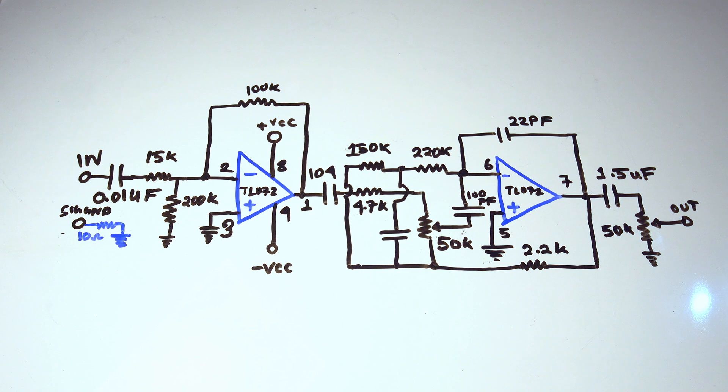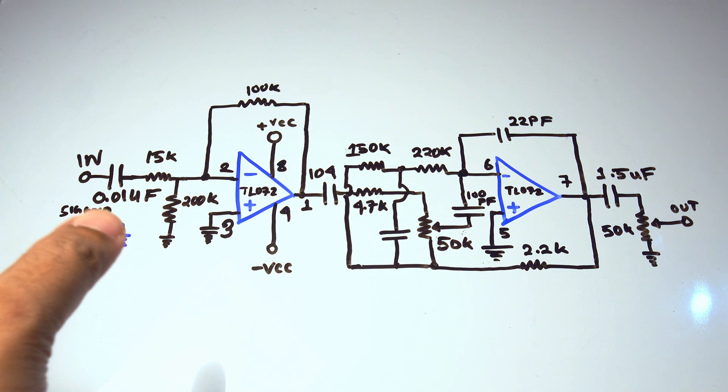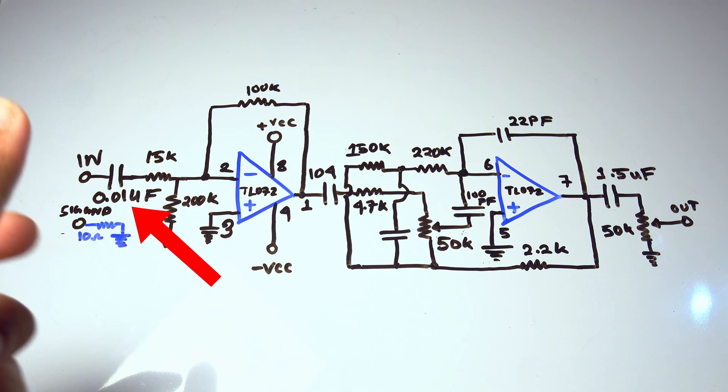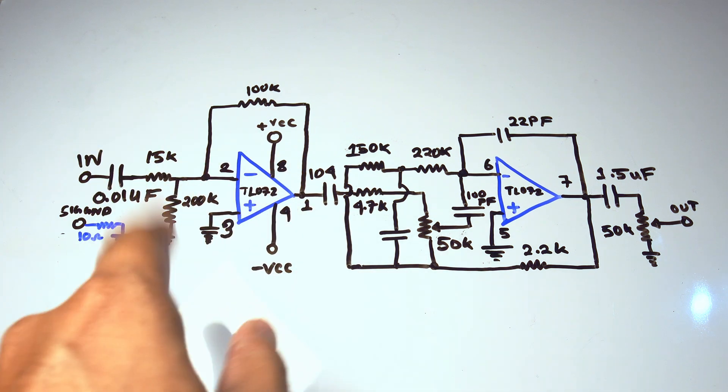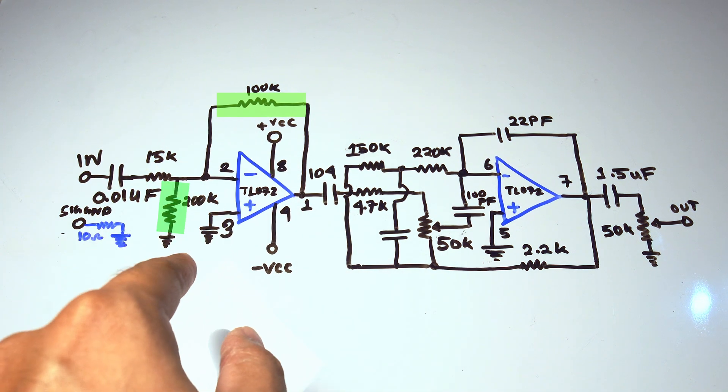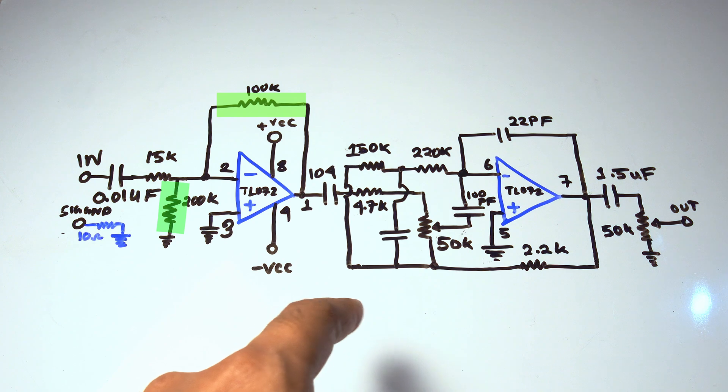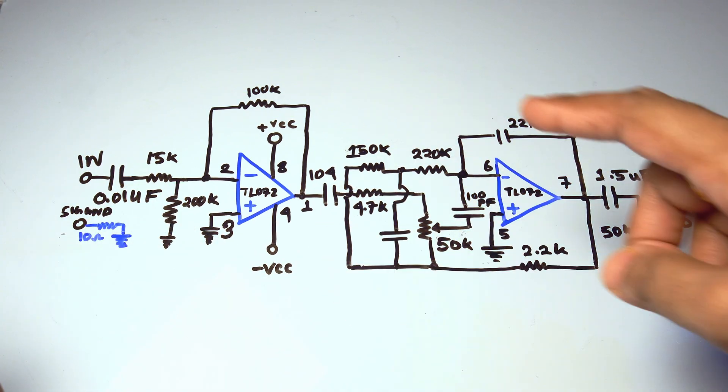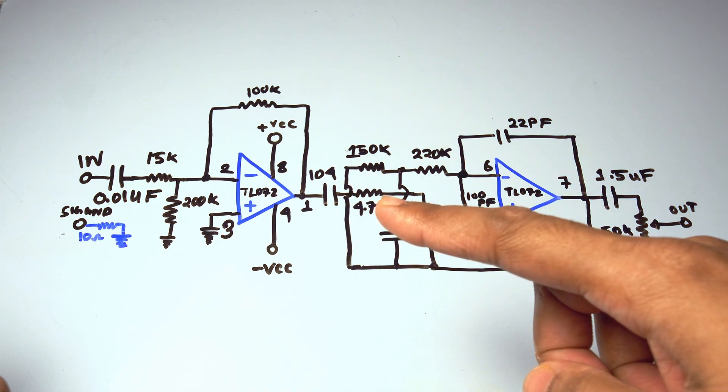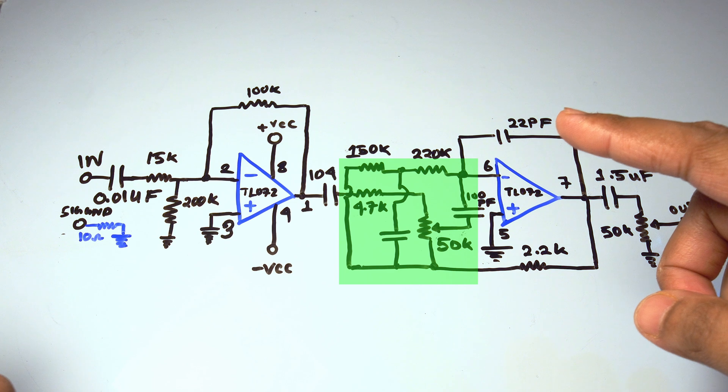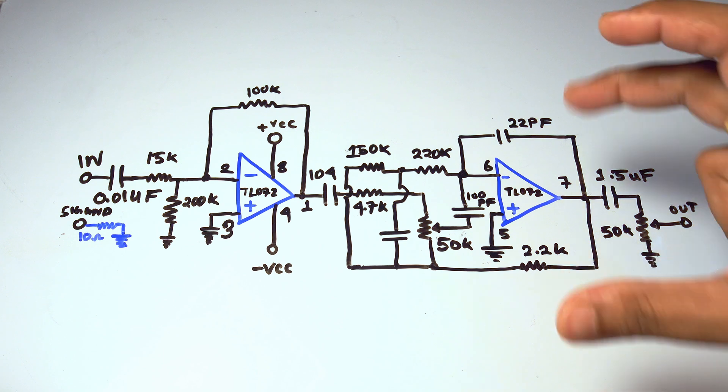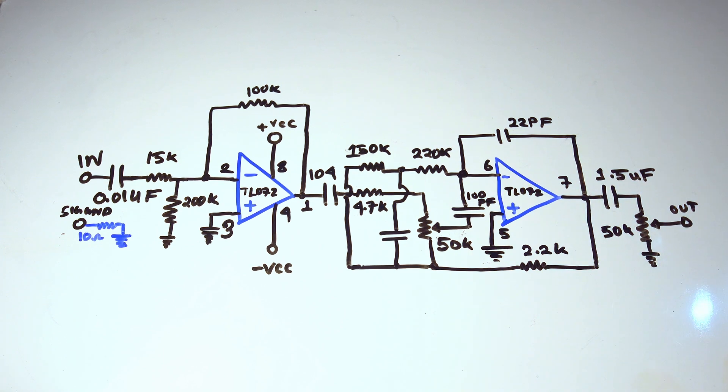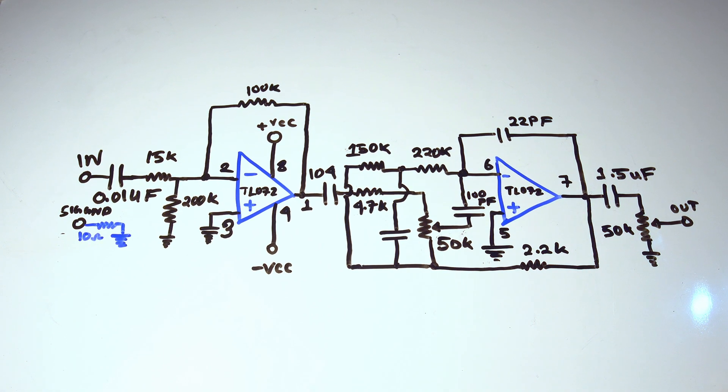The way it works is basically the high frequencies will get cut out because of the 0.01 microfarad capacitor. Then we're adding one gain circuit here with this 100k and 200k resistors. Then again we're using this high frequency filter circuit with two stages. Then we're adding this op-amp to drive the output. That's how it works. We need two of these for stereo.